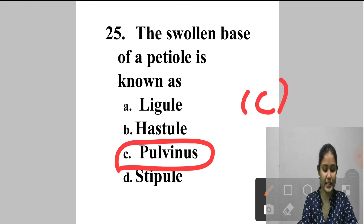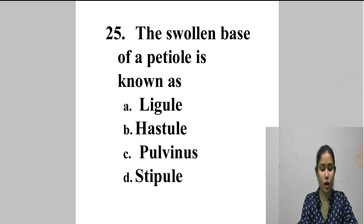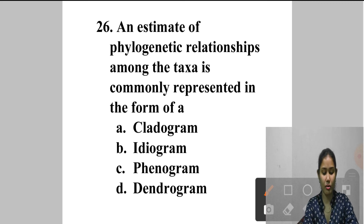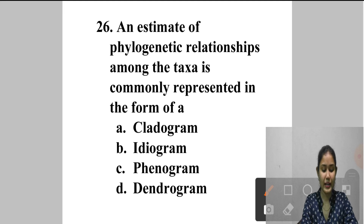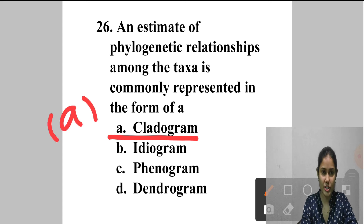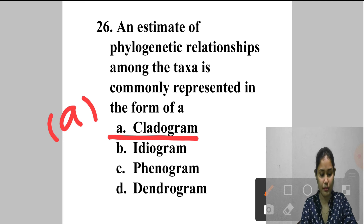Question 26: An estimate of phylogenetic relationships among taxa is commonly represented in the form of — A. Cladogram, B. Idiogram, C. Phenogram, D. Dendrogram. A cladogram is based on phylogeny — the study of evolutionary relationships. Phylogenetic relationships among taxa are represented in the form of a cladogram. Answer is option A.